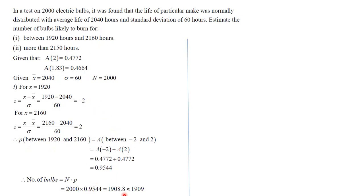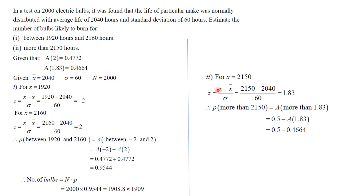So we'll get the number of bulbs, which is approximately 1909. Now the same is the case for this: more than 2150. For x equals 2150, we get 1.83, and this is the situation of more than, so we'll subtract from 0.5. We'll get here 0.0336. Multiply this by 2000, so the number of bulbs will be about 67.